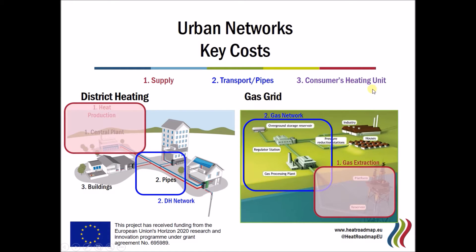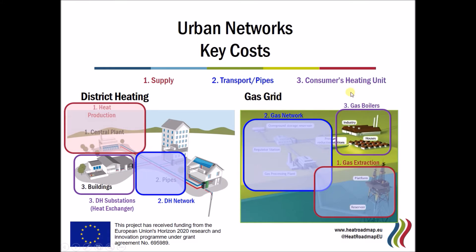The final key component is the consumer's heating unit — the unit that's actually in the user's building itself. In the district heating scenario, that's the heat exchanger that takes heat from the district heating network and puts it into the building, whereas in the gas situation, that is a gas boiler that combusts the fuel from the network and produces heat within the building itself.